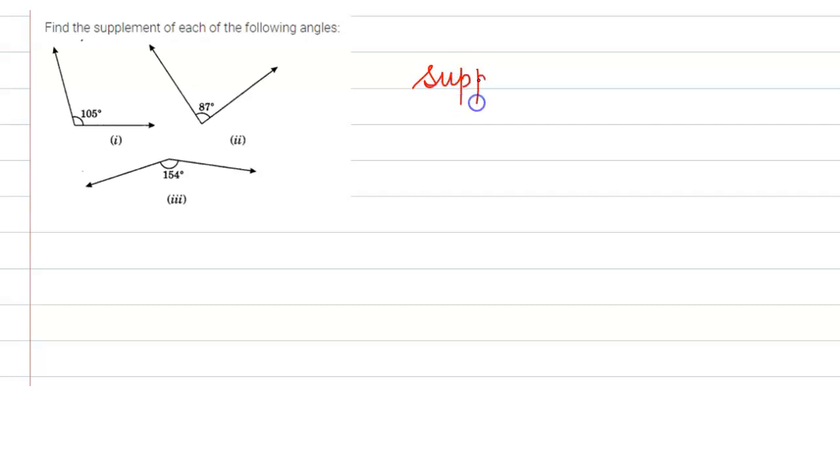So what are supplementary angles? If we talk about supplementary angles, these are those angles whose sum is 180 degrees. So let us suppose we have two angles, one is A degree and second one is B degree. So if the sum is 180 degrees, then these two angles are said to be supplementary angles.